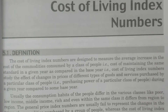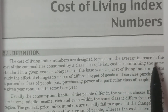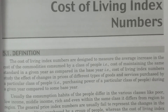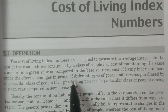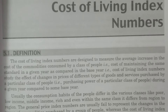What is the definition of cost of living index numbers? The cost of living index numbers are designed to measure the average increase in the cost of the commodities consumed by a class of people. We select a class of people so that the cost of maintaining the same standard in a given year as compared to the base year — we consider two time periods: the base period and another particular year.